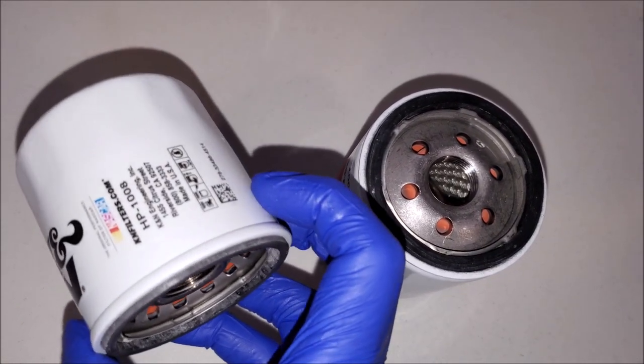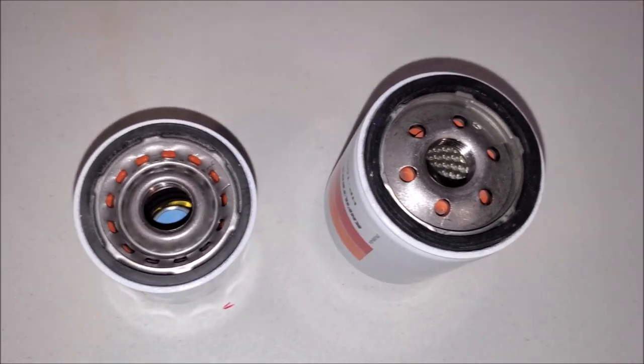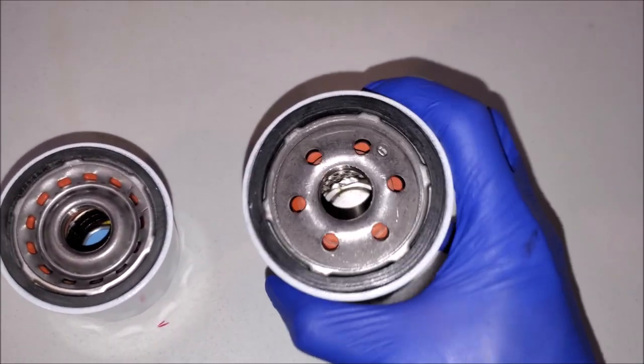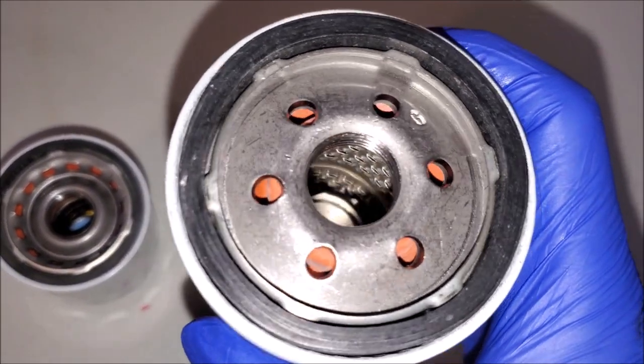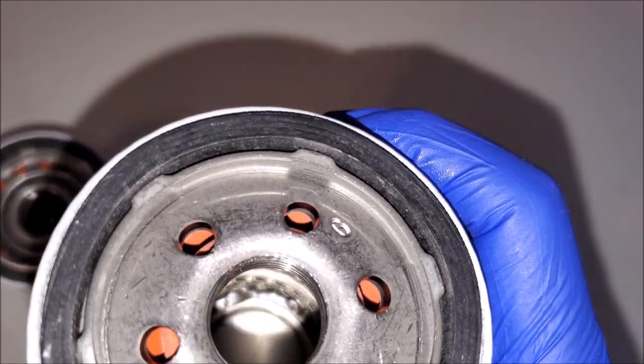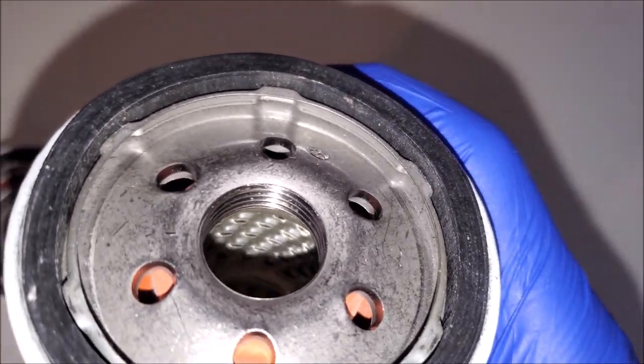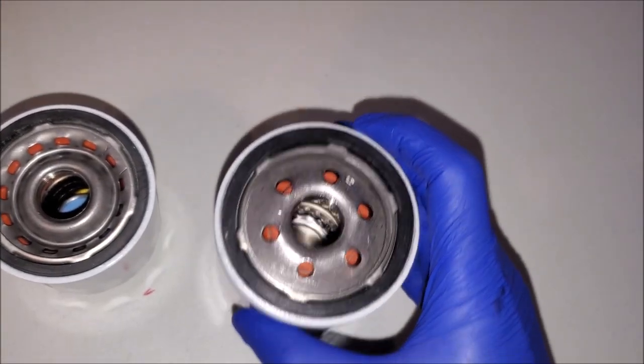So what I want to note is this is what I'm used to seeing inside a typical Canon oil filter. You can see inside that's holding the filter medium, it's completely metal.